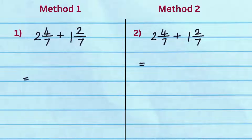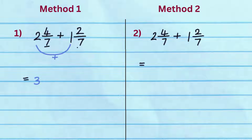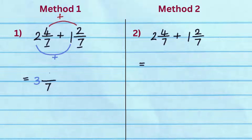Mixed fraction addition can be solved using two different methods. In method 1, first add the whole numbers of both the fractions, that is 2 plus 1 equal 3. The denominator of the two fractions is the same, so keep the denominator 7 as is. Now add the numerators of the two fractions, that is 4 plus 2 equal 6. We get the answer 3 and 6 sevenths.